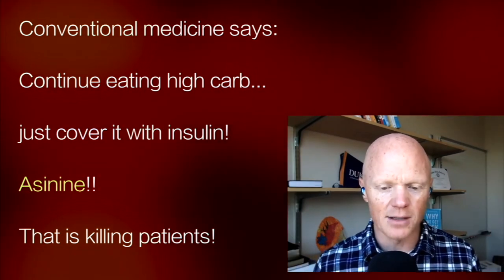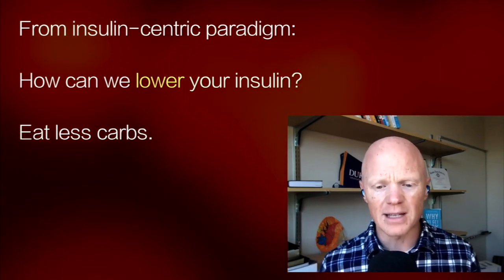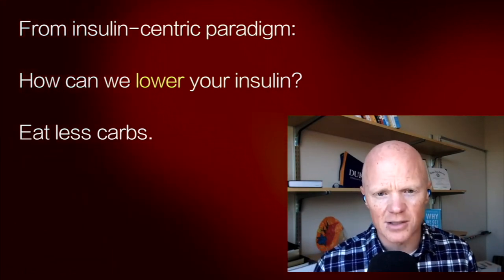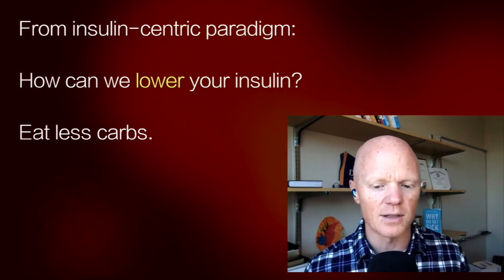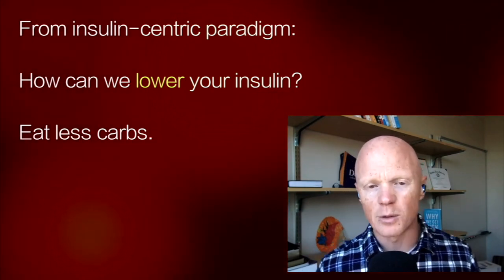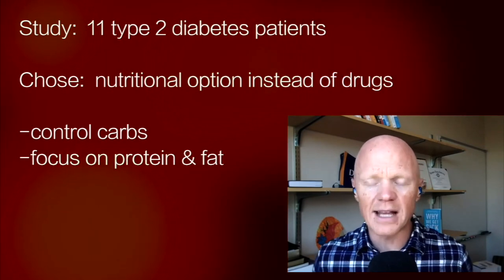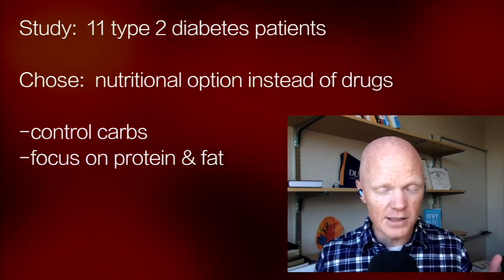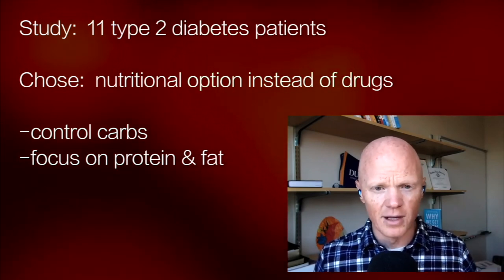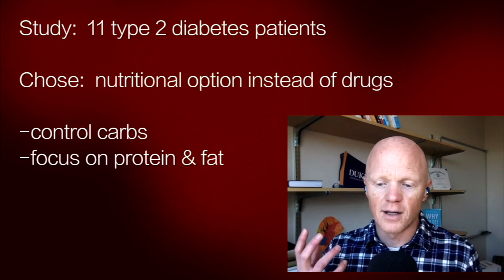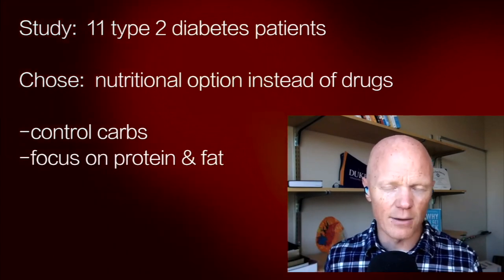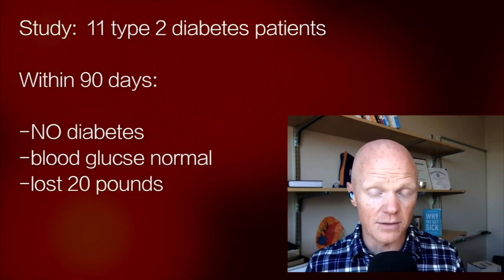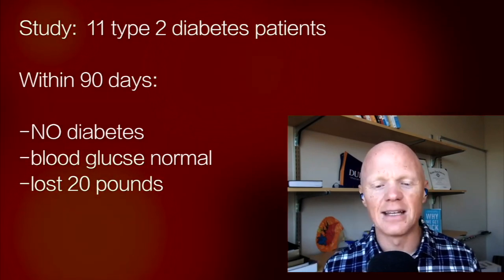If we look through an insulin-centric paradigm, we say: you have chronically high insulin — how can we lower it? Eat less carbs. You don't have to go zero-carb. We published a clinical case study with a clinic here in my area. We took 11 middle-aged women with full-on type 2 diabetes. When they were diagnosed, the option was a drug prescription — which means taking that drug forever at higher and higher doses — or a nutritional prescription: control carbs, focus on protein and fat. They elected to follow the low-carb, even ketogenic diet.